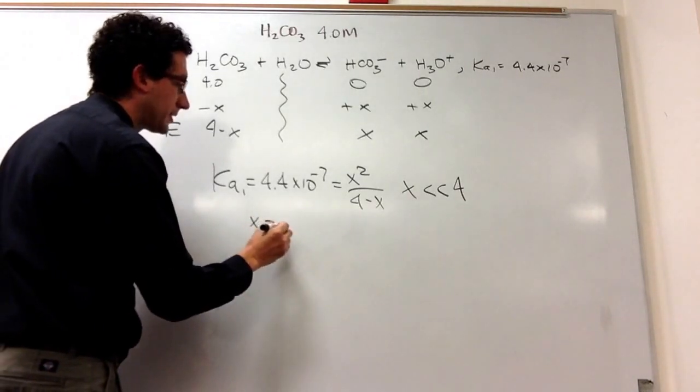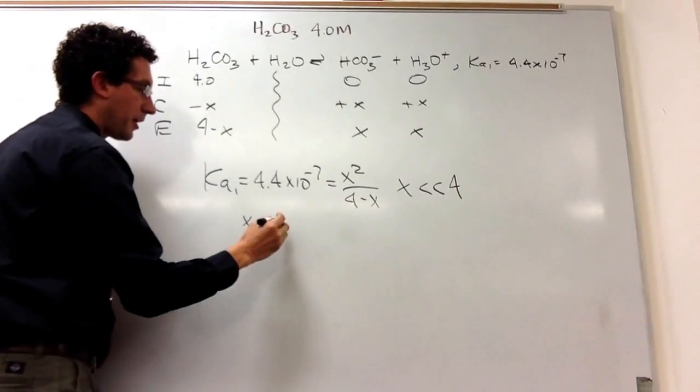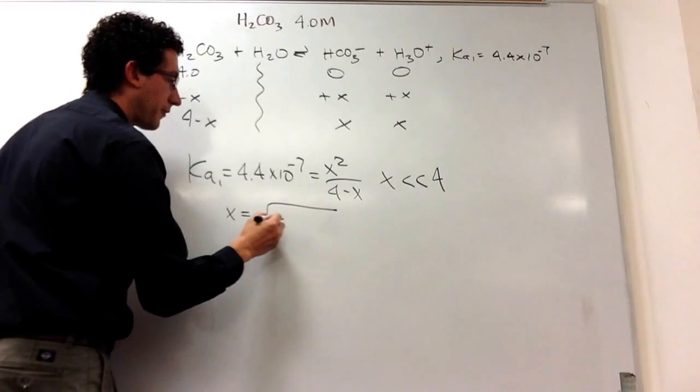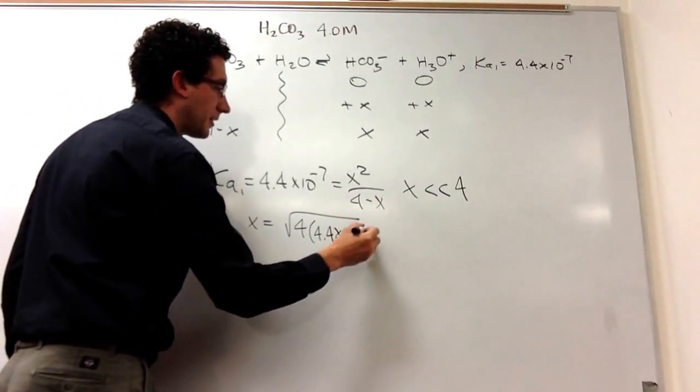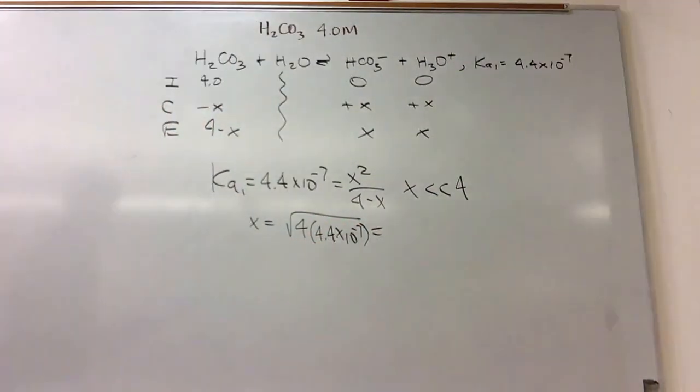So X is a lot, lot less than 4. That drops out, X in the denominator. This is going to be the square root of 4 times 4.4 times 10 to the minus 7. In order to continue, we need that number.